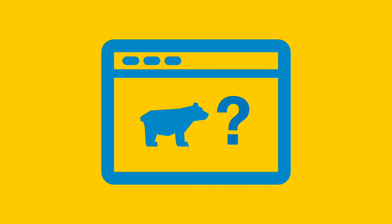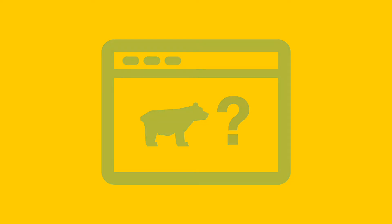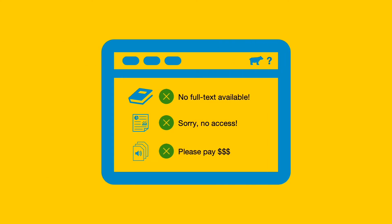First, let's talk about why we need to use a VPN from off campus. When you're off campus, websites don't necessarily know that you're a Bruin. This means that if you go to a website and try to access an ebook or an article, you might not be able to get the full text. You might get an error message, or the website may even ask you to pay a fee. Don't ever pay that fee.